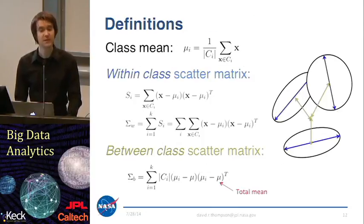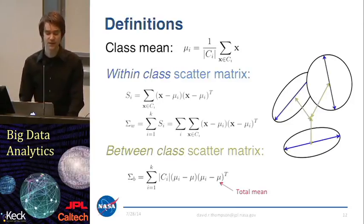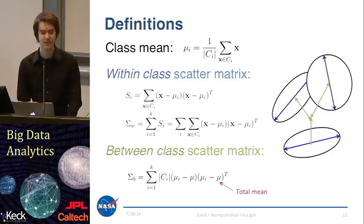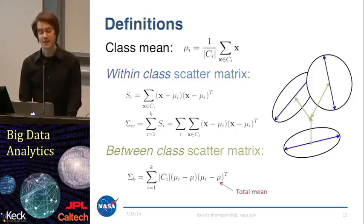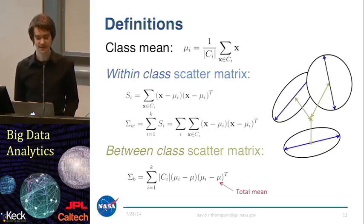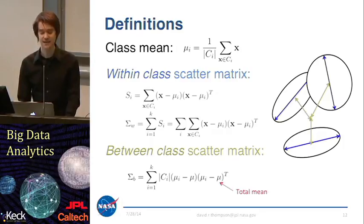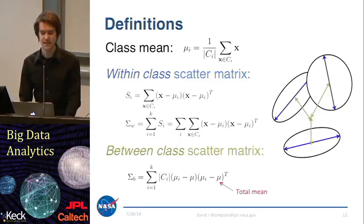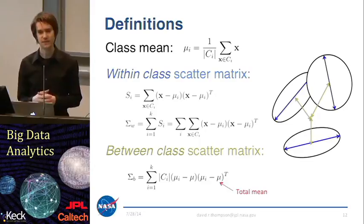Here are some definitions to get us started. First, I'll define the class mean as the mean of all data points having a certain class label. We have a class mean for each one of our k different classes. We also define scatter matrices to represent the spread of the data. The within-class scatter matrix is defined in a fashion similar to the sample covariance matrix — just looking at squared distances against the mean, done for each class independently. The sum of all within-class scatter matrices gives the total within-class scatter matrix. This is represented graphically as ellipsoids, where the within-class scatter is represented by the blue lines measuring how compact each class distribution is.